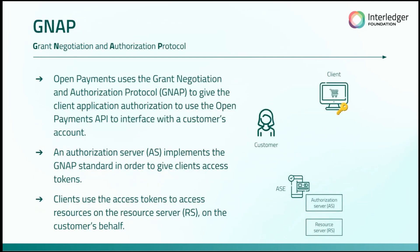GNAP stands for Grant Negotiation and Authorization Protocol. Open Payments basically specifies that we use this authorization protocol to give client applications authorization to use the Open Payments APIs so they can interface with a customer's account. This is the authorization protocol we're using to allow clients to have direct access into their customers' accounts. An authorization server needs to implement this GNAP standard in order to give clients those access tokens.